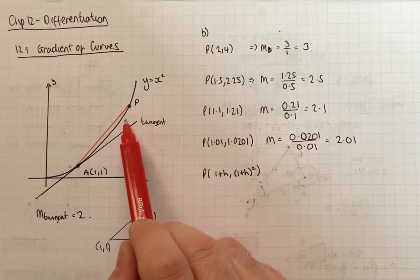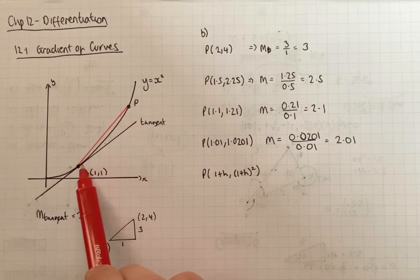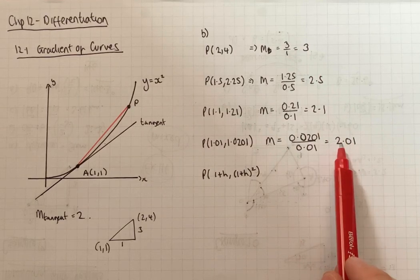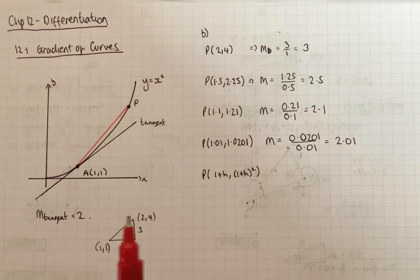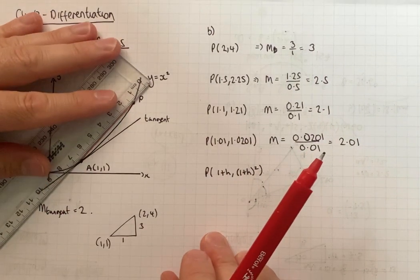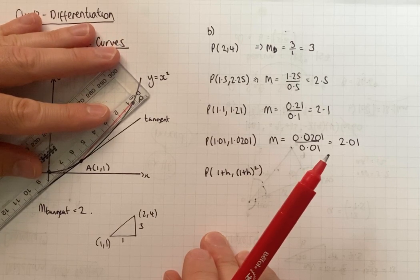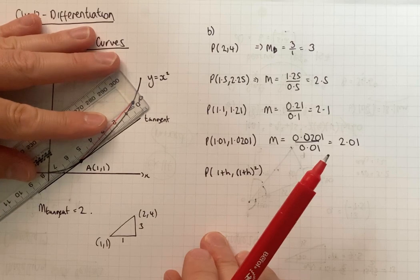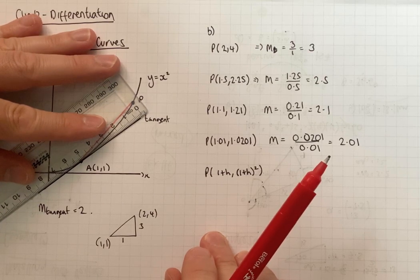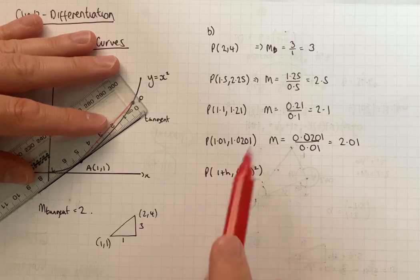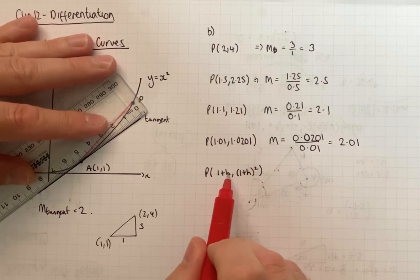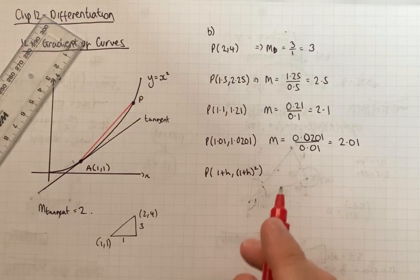So the closer P becomes to A, the closer P gets to A, the closer the gradient gets to the gradient of the tangent. That makes sense because this is the gradient of the chord. So as the distance is reduced, you can see the chord eventually becomes the tangent when the distance between A and B is significantly small. And that's what we do here because we say H is a really small number.